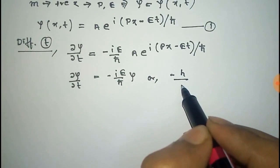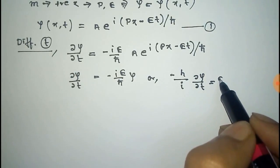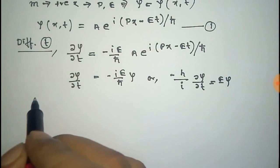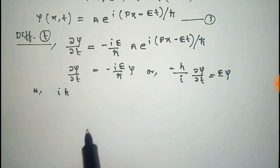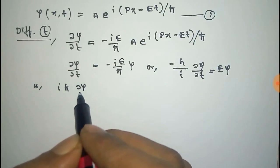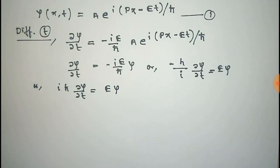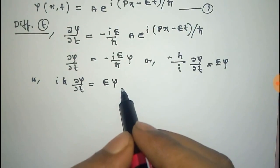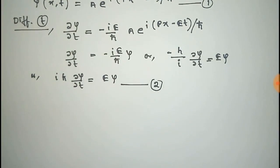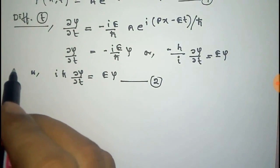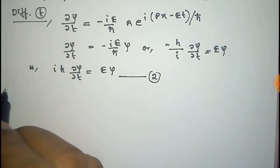We can write this equation as: −ℏ/i · ∂ψ/∂t = E·ψ. Multiplying i on numerator and denominator, we get iℏ · ∂ψ/∂t = E·ψ. We take this as equation number two.